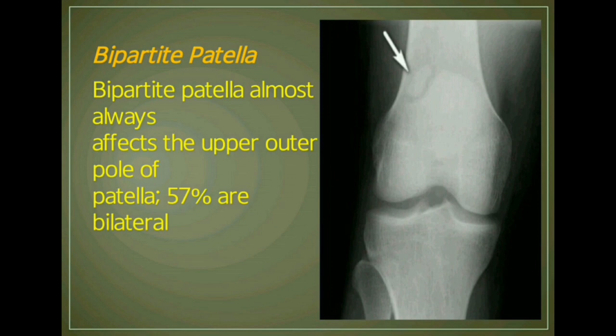Normally the two bones fuse together as a child grows, but in bipartite patella they remain as two separate bones. About one percent of the population has this condition. Bipartite patella almost always affects the upper outer pole of the patella, and 57% of cases are bilateral.